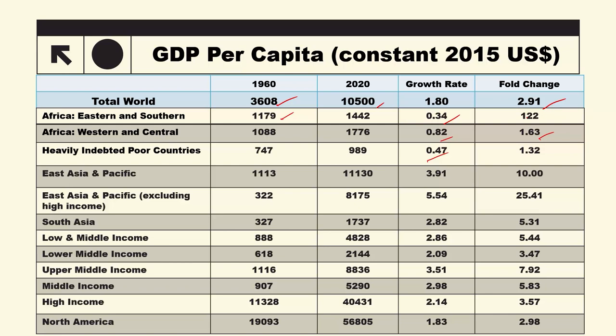East Asia's performance in this time period was the best. East Asia and Pacific: in 1960, per capita GDP was 1,113 USD. The growth rate over this period was 3.91%, almost 4%. This makes it the strongest-performing region.